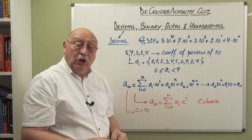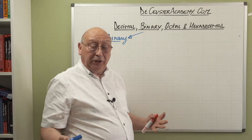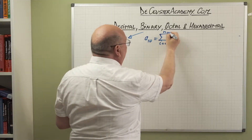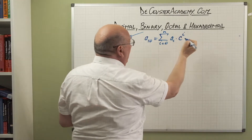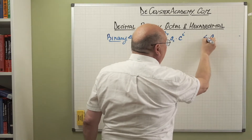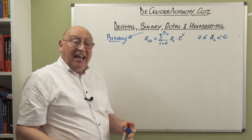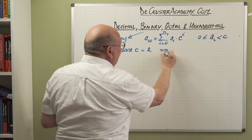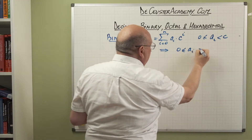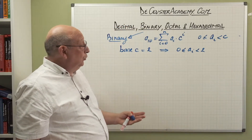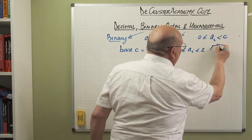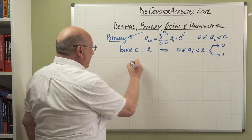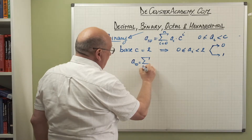We are going to use the same formula to create numbers with a different base. The general expression is: a decimal number equals the sum for i equals 0 to n of a_i times c to the power i, where a_i is between 0 and c. For binary numbers, the base c is 2, which means a_i is between 0 and 2 not included — so the coefficients are either 0 or 1. That's where the name binary comes from.